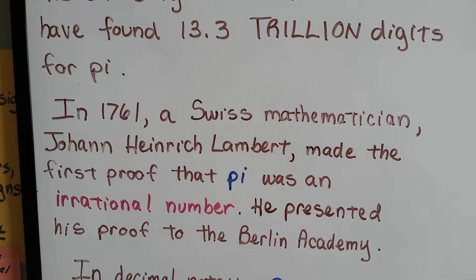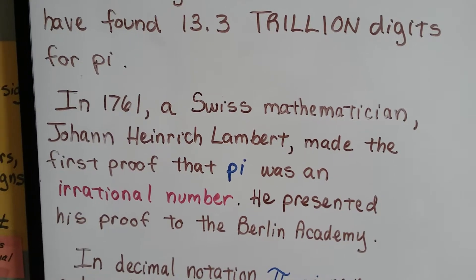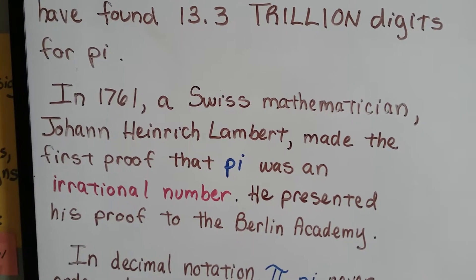In 1761, a Swiss mathematician, Johann Heinrich Lambert, made the first proof that pi was an irrational number.